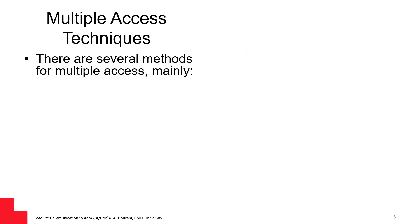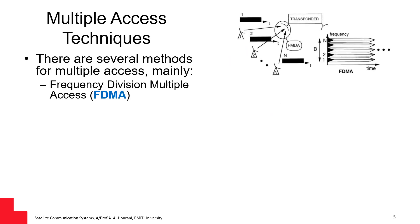The first multiple access method is called frequency division multiple access, where the satellite has a bandwidth B, and this bandwidth is divided among the users. This division does not have to be equal, but if it is equal, each user will get a bandwidth of B divided by N.